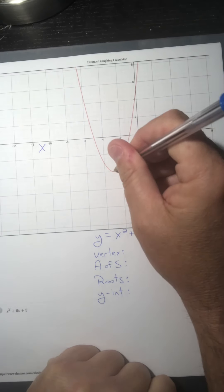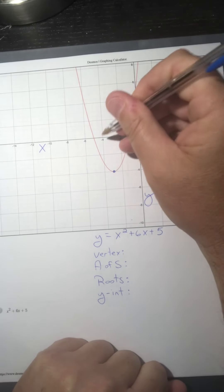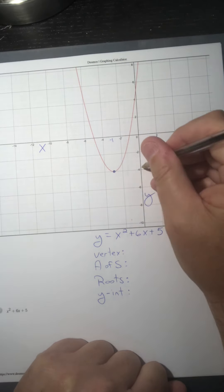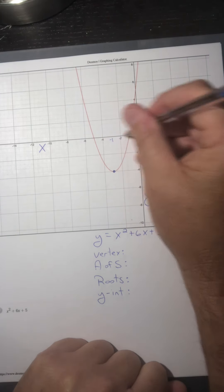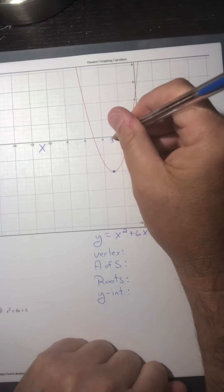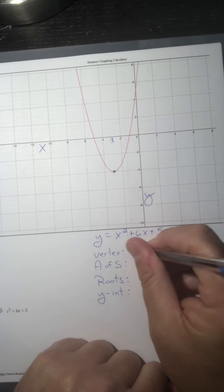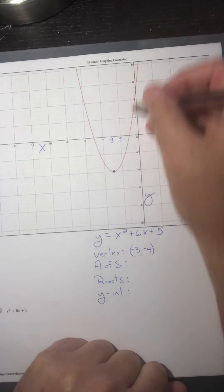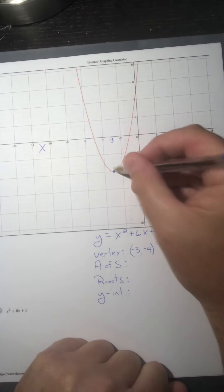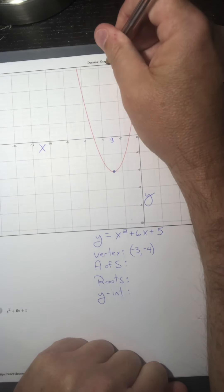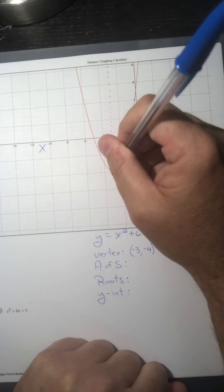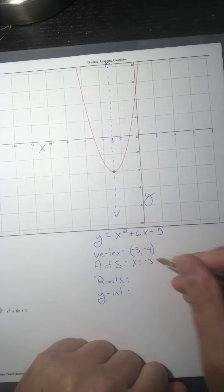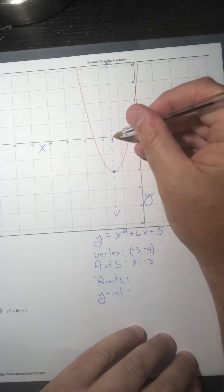Same concept — we're looking for the vertex. This point is at x equals negative 3 and y equals negative 4, so the vertex is (−3, −4). The graph is changing direction there — coming down, now going up. Next, the axis of symmetry is that dotted line going through the vertex. We write it as x equals, and it's always that x-value from the vertex: x equals negative 3.